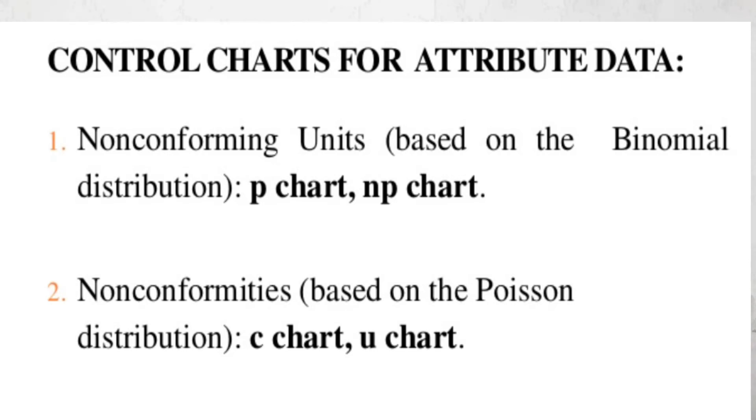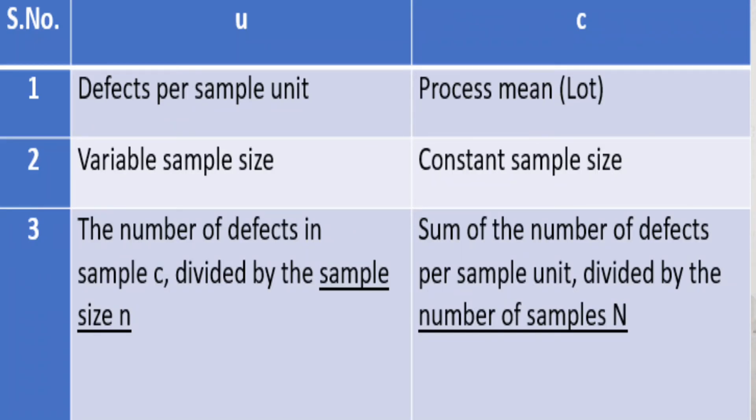Now, to talk specifically with respect to U and C chart, broadly, the difference is similar to P and NP chart. In U chart, we are talking about defects per sample unit. In C chart, we are talking about the process mean. In U chart, variable sample size is being used, while in C chart, constant sample size is being used.